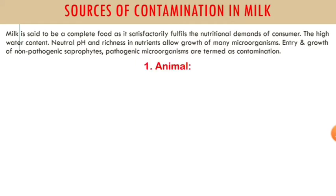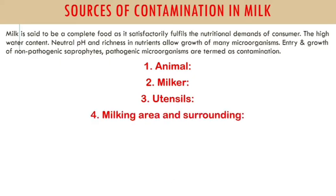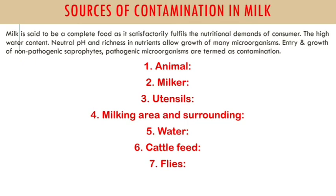Let's see what the sources are. The first source is the animal, second is the milker, third is utensils, fourth is the milking area and surroundings, fifth is water, sixth is cattle feed, and seventh is the fly. These are the main seven sources of contamination in milk, and we will understand each one by one.